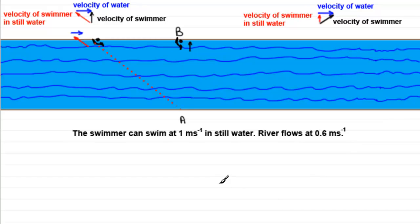So if we're drawing the vector triangle, we start then with the velocity of the swimmer, which we mark in as a velocity vector, one meter per second, going straight across the river in the direction A to B. And then we've got the velocity of the water, left to right here, going at 0.6 meters per second. And then the resultant velocity of the swimmer, indicated by this black vector, we'll call it V.